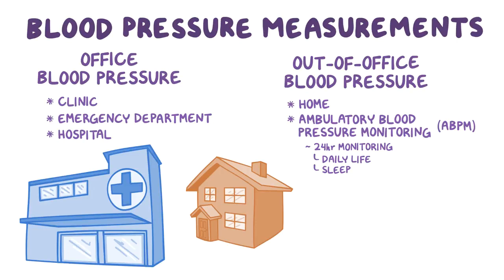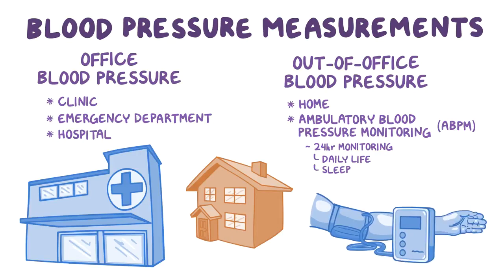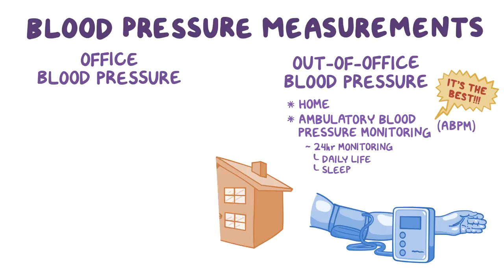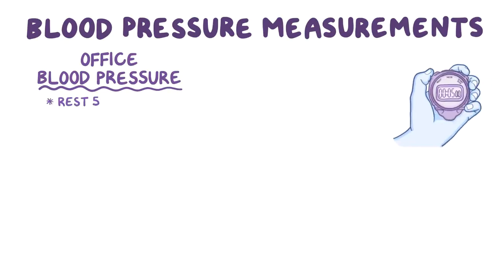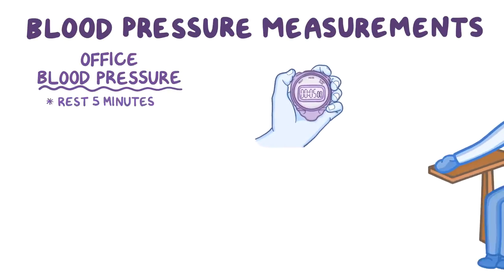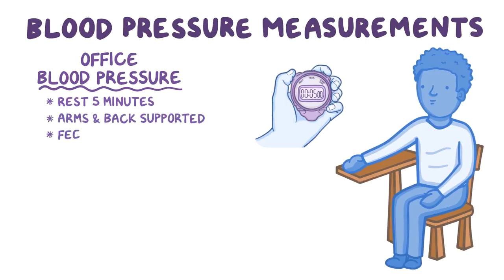ABPM uses a small digital blood pressure machine attached to a belt around the body and connected to a cuff around the upper arm. Ambulatory blood pressure monitoring is the best way to diagnose hypertension, but it's not always feasible, so it's usually done when office and home blood pressure measurements are really discordant. The first step for an office blood pressure is to make sure the patient has rested for at least five minutes, is positioned properly, sitting with their arms and back supported and feet flat on the floor, and the measurement should be repeated at least twice.